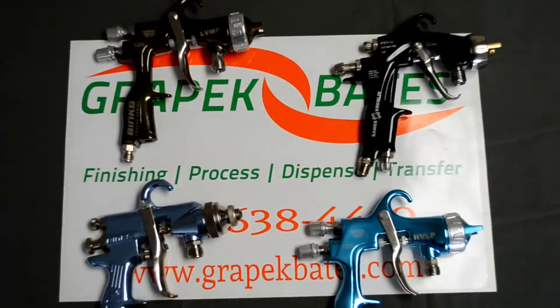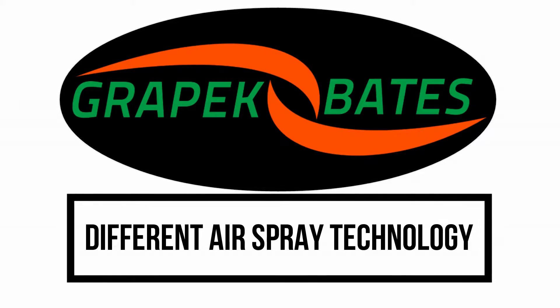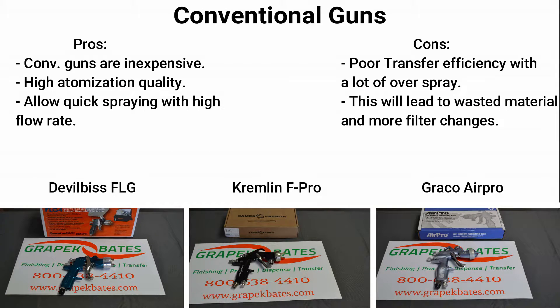Light viscosity materials can also be sprayed by changing the needle and nozzle size in the gun. Now we'll be getting into the different air spray technologies. First is conventional spray. The pros for conventional guns are that they are inexpensive, they have high atomizing quality, and they allow sprayers to spray very quickly with a very high flow rate. The negative side to conventional is that they have very poor transfer efficiency with a lot of overspray. This leads to increased material waste and more spray booth filter changes.